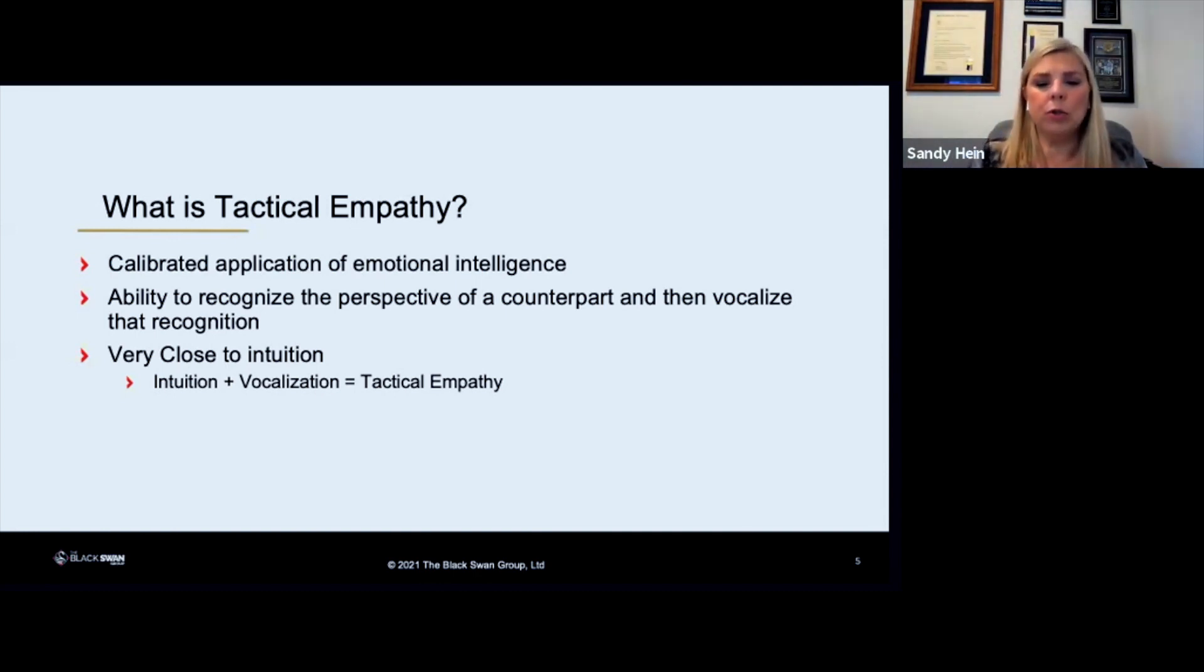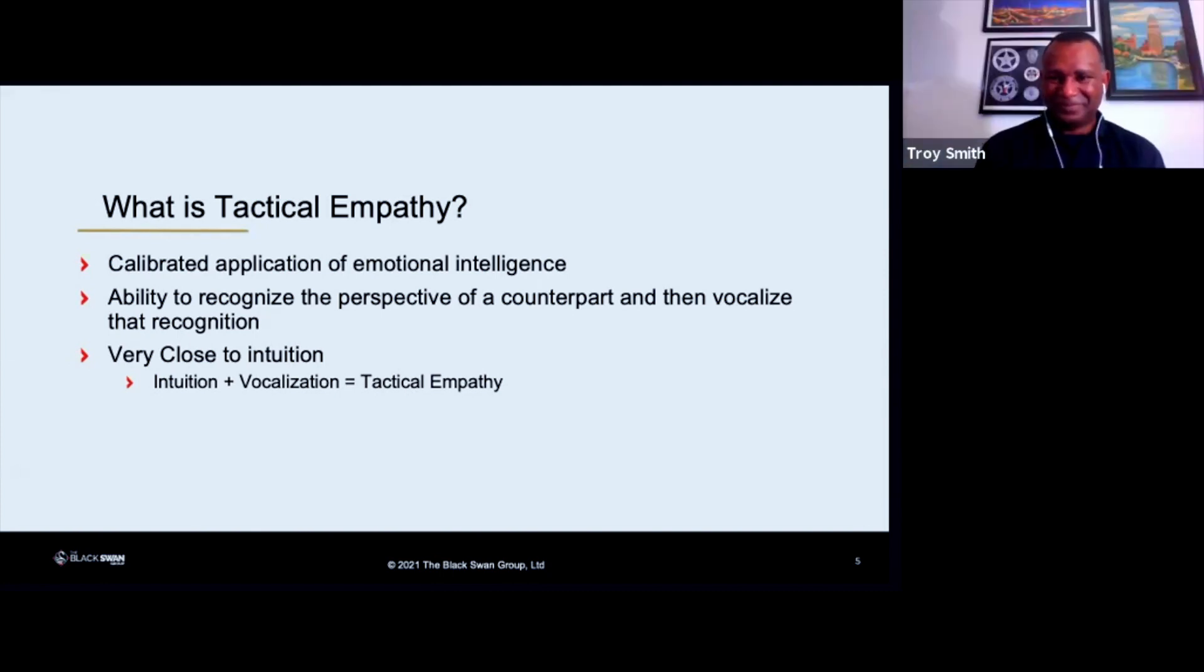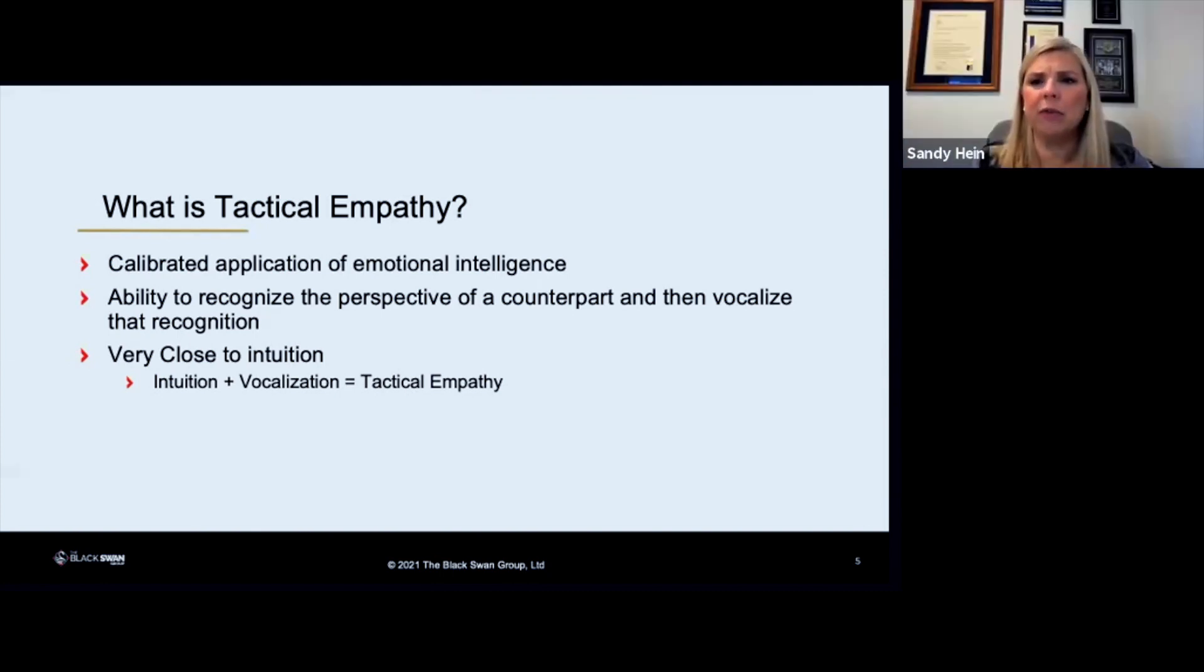The reason it is so important to learn how to trust your intuition is because your conscious mind processes 40 bits of information per second. Your unconscious mind processes 20 million bits of information per second. So there's a big disparity in that number. When you're talking about how many things your unconscious mind is picking up each second, you get a lot of information if you learn how to trust that.